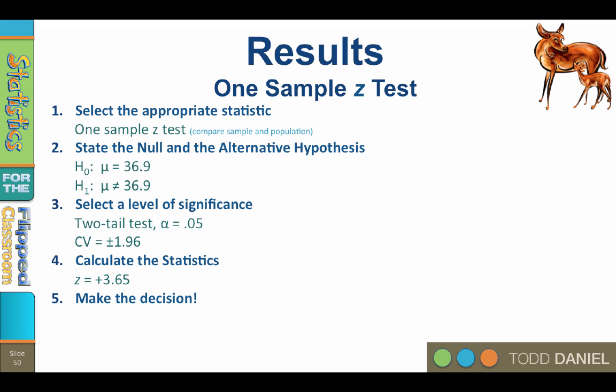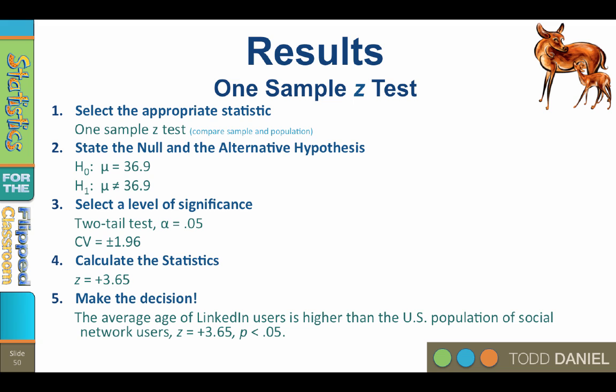Step 5: Make the decision. The average age of LinkedIn users is higher than the U.S. population of social networking users. Z equals positive 3.65, p less than 0.05.